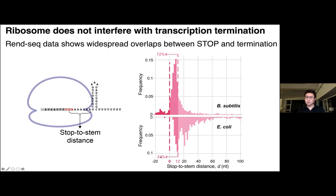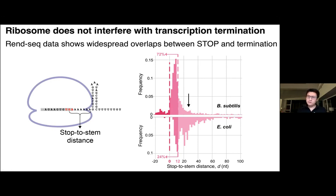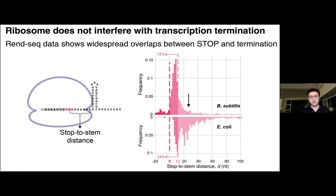That quarter of E. coli terminators with short distances actually have really low termination efficiency — they're weak terminators, indicating ribosomes are probably interfering with their termination activity. In contrast, a lot of terminators in Bacillus are terminating without ribosomes. Even for genes with long stop-codon-to-terminator distances, we can force translation through the terminator and still get really good termination, indicating again there's no closely trailing ribosome behind the polymerase.